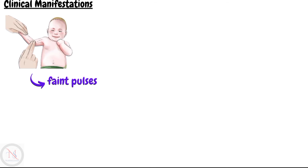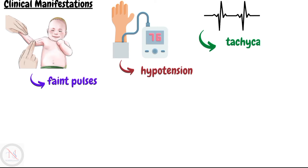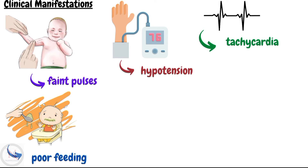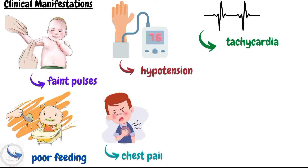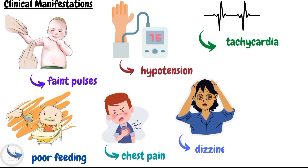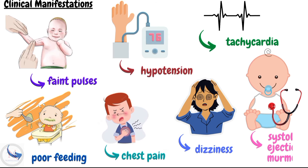The signs and symptoms of aortic stenosis vary by age. Newborns with critical aortic stenosis demonstrate signs of decreased cardiac output such as faint pulses, hypotension, tachycardia, and poor feeding. Children show signs of exercise intolerance including chest pain and dizziness when standing for long periods of time. A systolic ejection murmur may or may not be present.